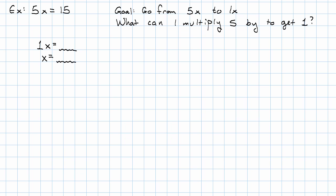The question is, what can I multiply 5 by to get 1? And the answer is, I can multiply by its reciprocal. So, remember that 5 is 5 over 1, its reciprocal is 1 fifth. So, I have 1 fifth times 5x equals 1 fifth times 15. 1 fifth times 5 is 1. Those cancel out. So, I'm left with 1x equals 3 or just x equals 3. Notice that that works, right? 5 times 3 really is 15.